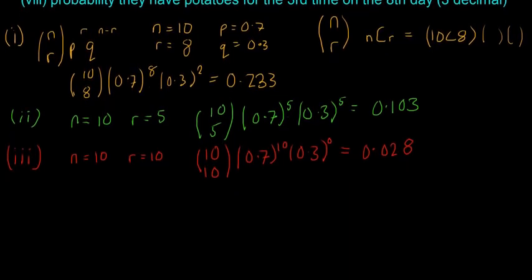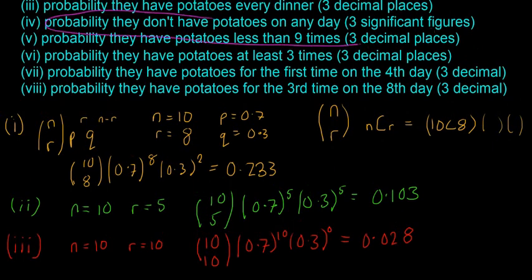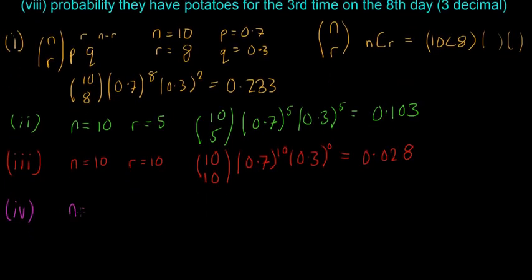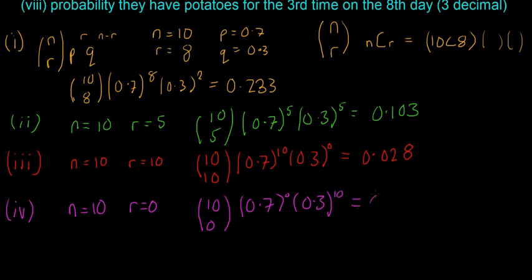And we'll go to part four. The probability that they don't have potatoes on any of the days. So in this case n is equal to 10, so it's still 10 dinners, and r is equal to zero. So there's no successes or they have no potatoes. So 10 choose 0, and it's going to be 0.7 to the power of 0 and 0.3 to the power of 10. And in this case the answer is going to be quite a small number. So 0.0000590, so that is three significant figures. Significant figures are a little bit different to decimal places, but it's going to be quite a low number because it's not that probable to have no potatoes on any day.